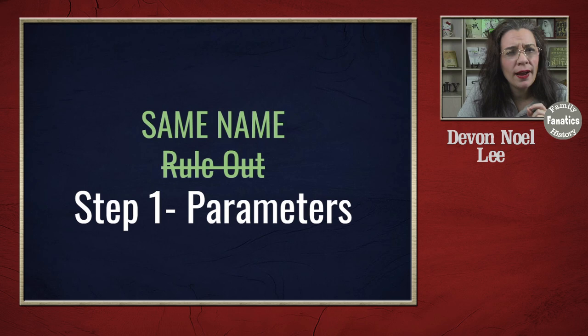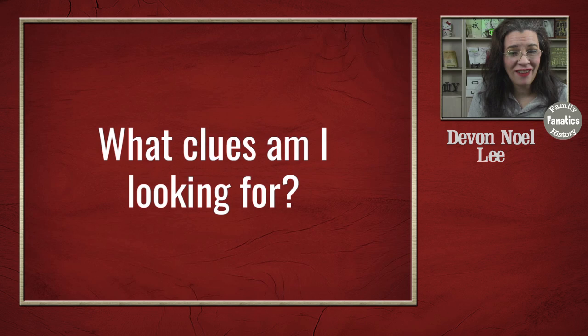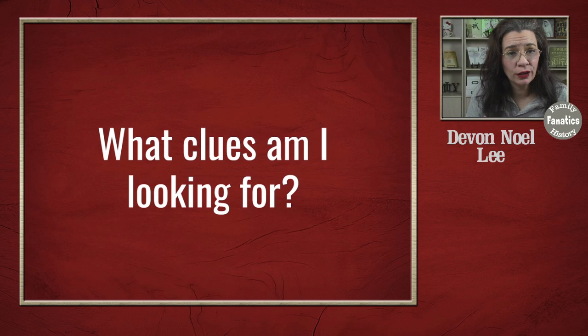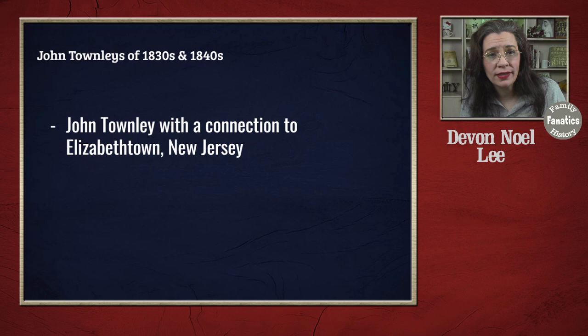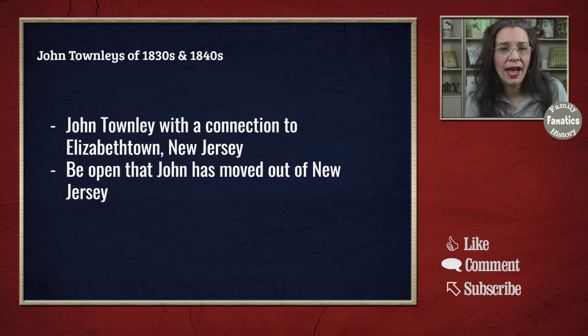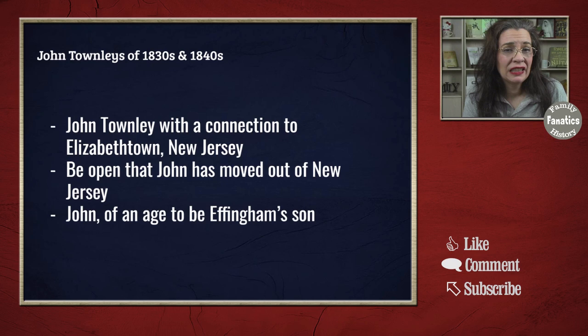Let's dive into what I am setting as my parameters. To find the most likely son of Effingham Townley, who died in 1828 in Elizabethtown, New Jersey and named John as one of his heirs, I need to be looking for Johns in 1830 and 1840, hopefully in Elizabethtown, New Jersey. However, the West had started opening up and people were starting to migrate to Ohio and other locations, so I need to be open to the possibility that John has moved to another location.